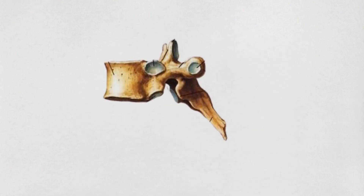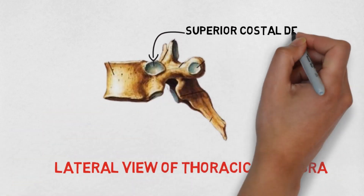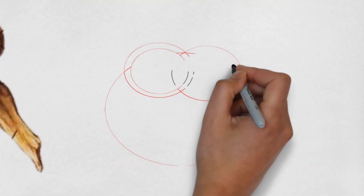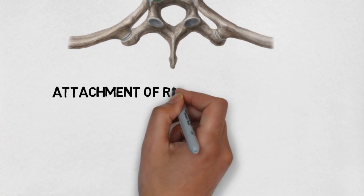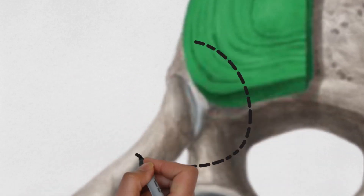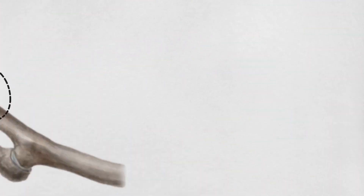So this is the lateral view of the thoracic vertebrae. This is the superior costal facet — it is near the upper border and is larger in size. The next we have is the inferior costal demi-face. Now let's see how these costal facets are attached with the ribs. This is the structure for attachment of the rib with the superior and inferior costal demi-faces. This is the rib and this is how the ribs are attached with the demi-faces. We will learn about the ribs later on.